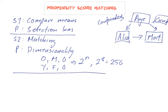In 1983, Rubin and Rosenbaum discovered a third solution: propensity score matching. They found that you can take all those confounding variables — age, gender, and so on — and combine them into one single variable, then compare people on just that one variable rather than matching on eight or more separately.